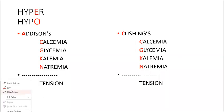I'm going to give you a quick way to remember the key differences between Addison's and Cushing's disease. The first thing I want you to do is to write out this prefix here, hyper and hypo.